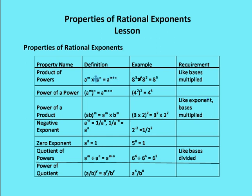When I multiply those two bases together, I'm going to end up adding the exponents. So if I have 8 to the third times 8 squared, I keep the base the same and add the exponents. 3 plus 2 is equal to 5. If I have 8 times 8 times 8, which is 8 to the third, times 8 times 8, which is 8 squared, I end up multiplying 8 five times. So 8 to the third times 8 squared gives me 8 to the fifth.